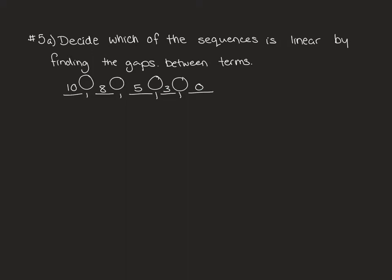Question 5 will start by asking you to decide which of the sequences is linear by finding the gaps between terms. I'll just go through one example. To get from 10 to 8 you'd subtract 2, and then to get from 8 to 5 we subtract 3, subtract 2 and then subtract 3 to get to the next term. So this one would be non-linear.